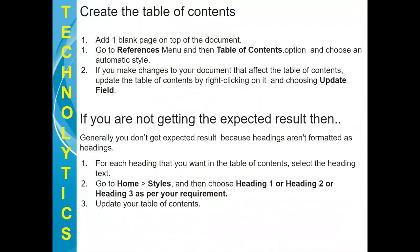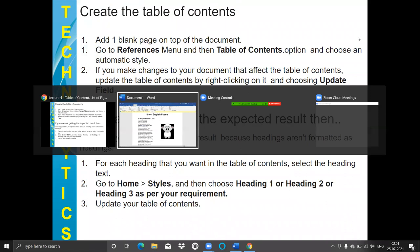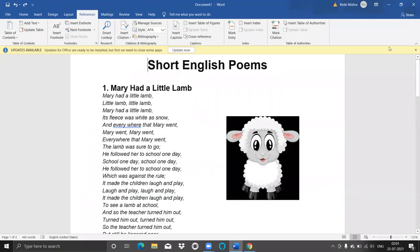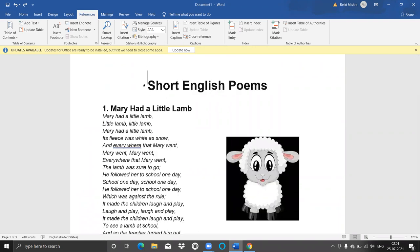Here, steps are given for creating a table of contents. But instead of going through all these steps, I will show you practically how to do this. All these steps I will be giving in the description box from where you can easily get and download them. I'm just opening my Microsoft Word document — this application I'm going to use for creating a table of contents automatically. I'll write the heading as 'Table of Content' on top.